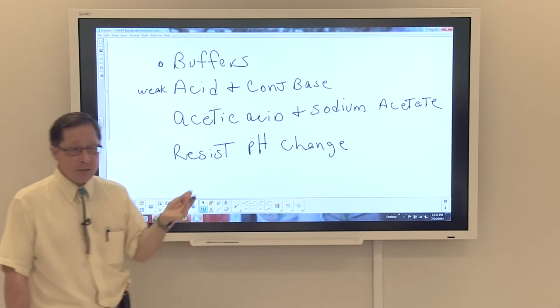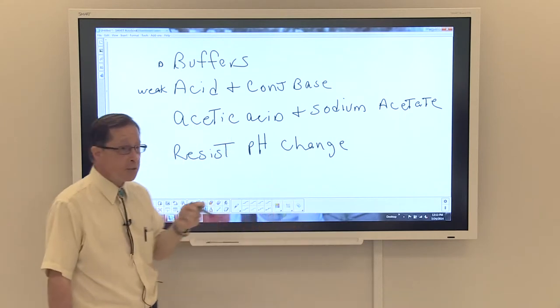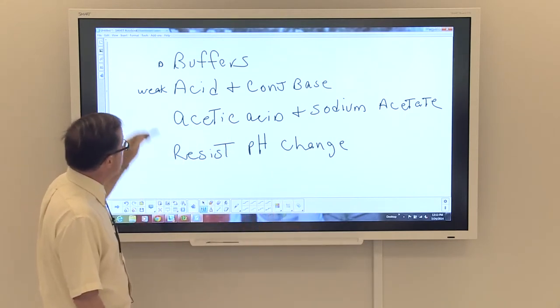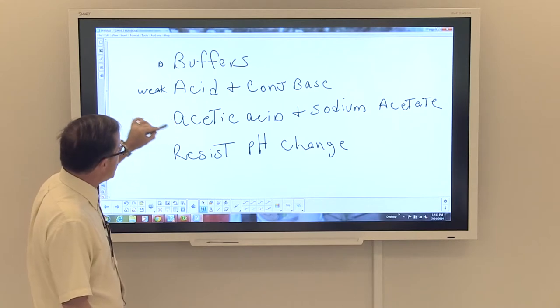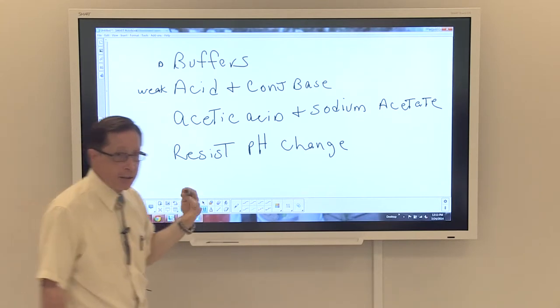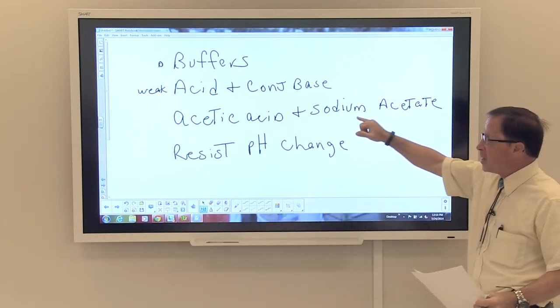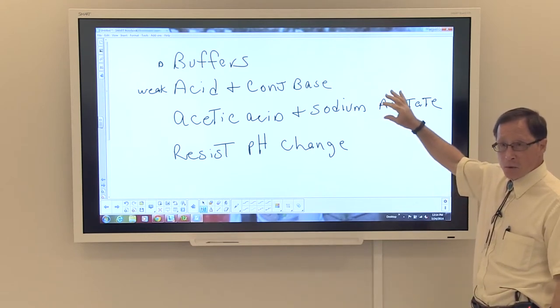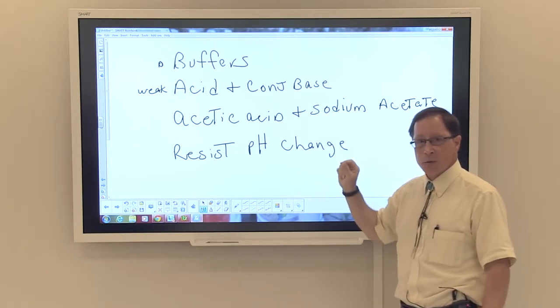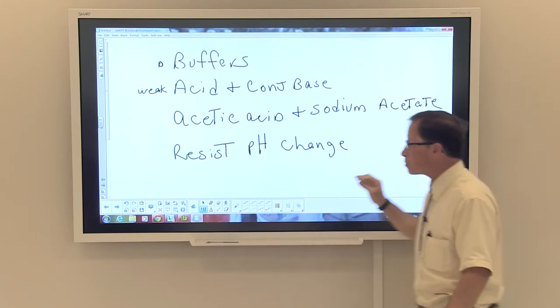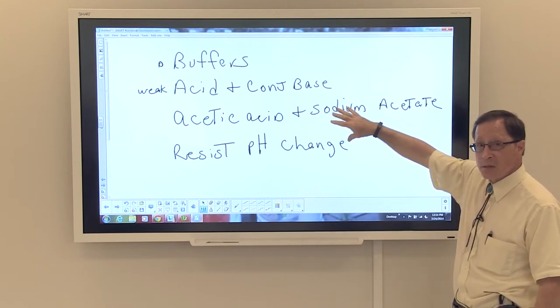You have an acid. An acid will donate protons. You have a base, and bases will accept protons. And so if you need to keep a pH stable, what happens is that when acid is added into this buffer mixture, the acid will react with your sodium acetate to neutralize. If you were to add a base into this buffer solution, the base will react with your acid and be neutralized. And so for that reason, these things are resistant to pH change.